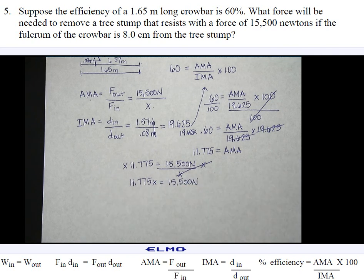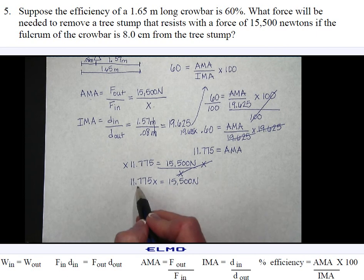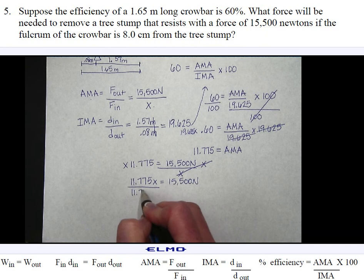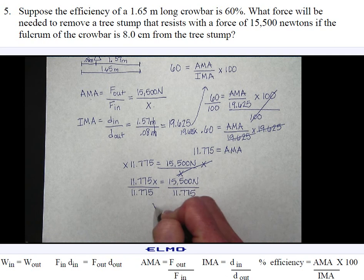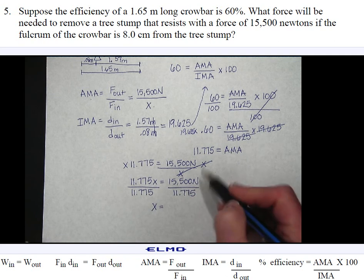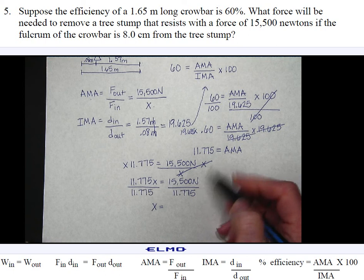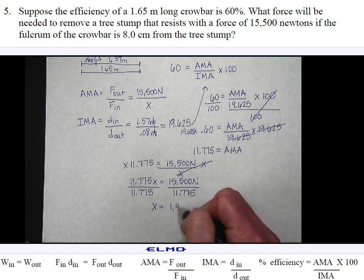And then to undo multiplying 11.775 times X, to undo the multiplication, I'm going to need to divide both sides by 11.775. Now I'll have a newton left because I'm not dividing by a newton. And when I divide these two numbers out, I get 1316.35 newtons.